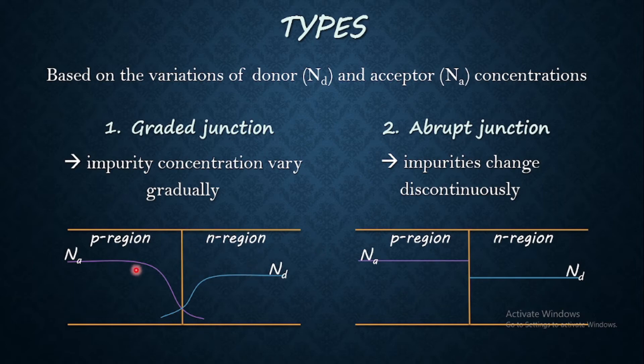But when you consider the graded junction, there is a certain probability of finding some acceptors in N region and donors in P region. So this is the difference between the two.